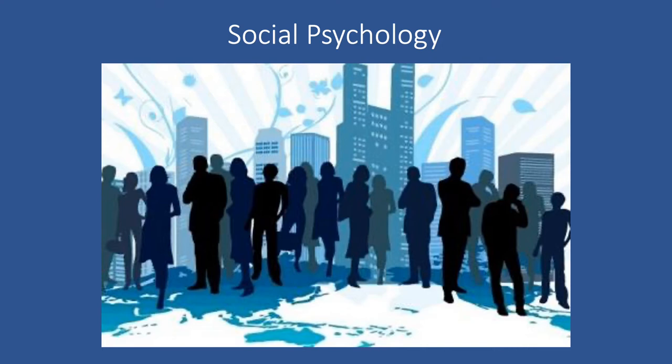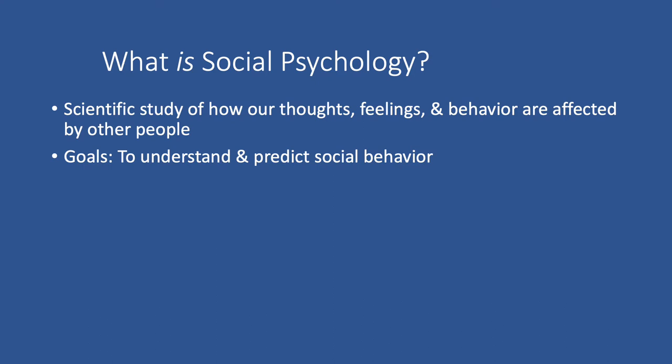Welcome to Psychology 205, Social Psychology. Let's start with a formal definition: social psychology is the scientific study of how our thoughts, feelings, and behavior are affected by other people. The goals of social psychology are to understand and be able to predict social behavior. In one way or another, this course is really going to be about how we are affected by other people.